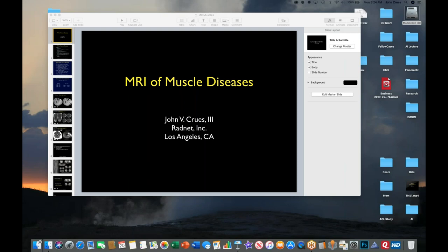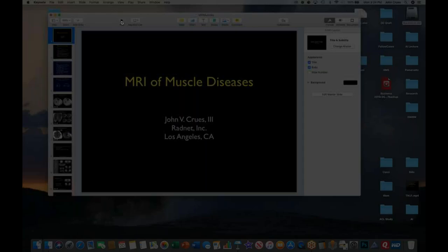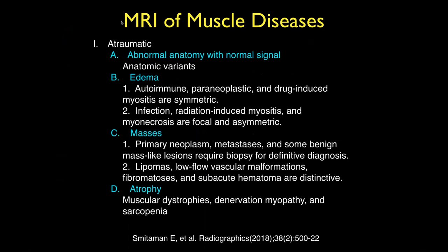Let's talk a little bit about muscle diseases. There are a number of ways to categorize muscle diseases. One of them from a Radiographics paper I thought was useful: there are traumatic abnormalities which have to do with abnormal anatomy and normal signal, which would be the anatomic variants — significant ones we've talked about. Edema within muscles can be due to autoimmune disease, paraneoplastic disease, drug-induced myositis, and infectious diseases.